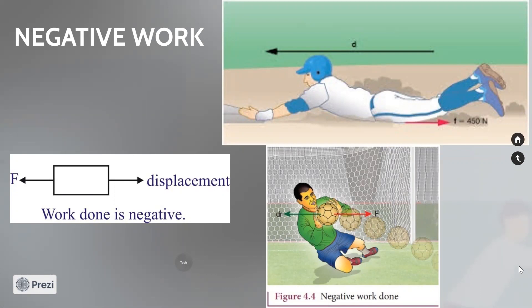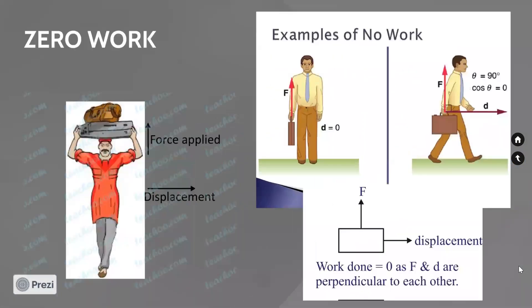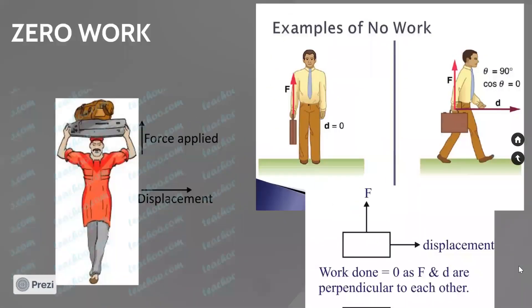If an object moves in the upward direction, work done by gravitational force is going to be negative. So we have positive work, negative work, and the third type is zero work. Zero work occurs when you apply a force but there is no displacement.